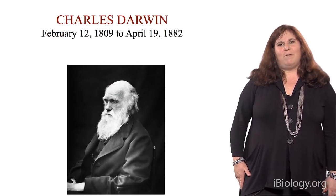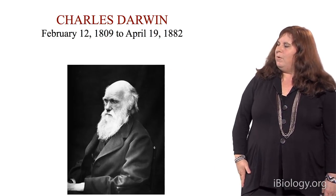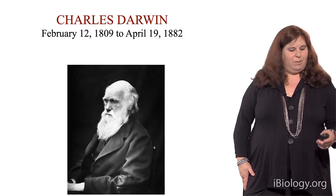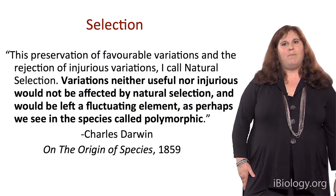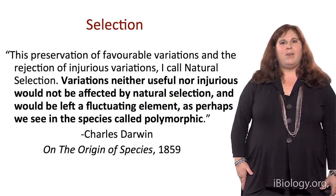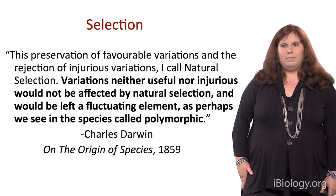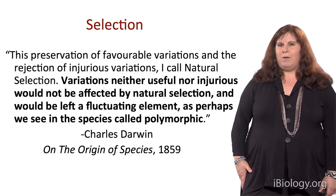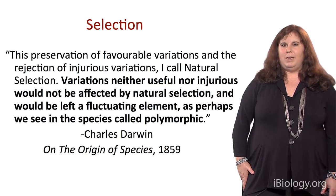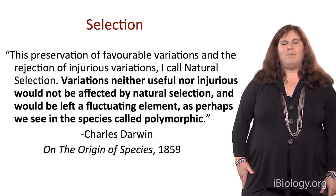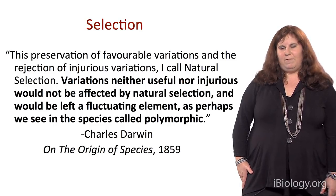If we're going to be talking about natural selection, we have to first acknowledge Charles Darwin, who came up with the theory of natural selection. To quote from Darwin: 'This preservation of favorable variations and the rejection of injurious variations I call natural selection. Variations neither useful nor injurious would not be affected by natural selection and would be left a fluctuating element, as perhaps we see in the species called polymorphic.' That was from his classic book, On the Origin of Species, published in 1859.